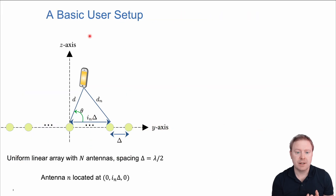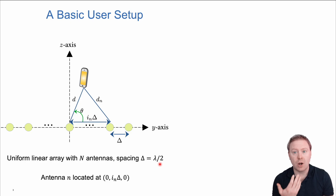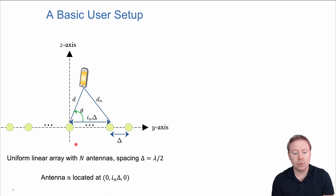Looking at the basic user setup, we have a user in line-of-sight to a base station array with antennas in a uniform linear array with spacing delta—in this case delta equals lambda over 2, so half-wavelength spacing—and we have N antennas. Antenna n is located at index n times delta along the axis. To describe this channel, we can use the distance from the user to the origin and the angle with respect to the y-axis.